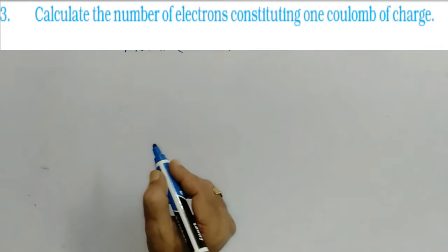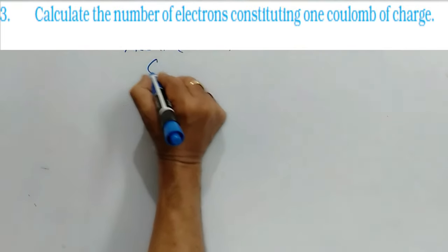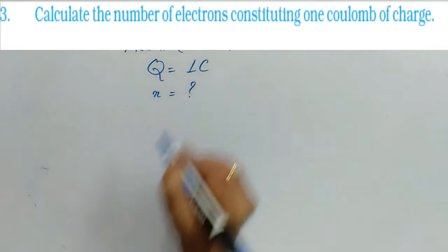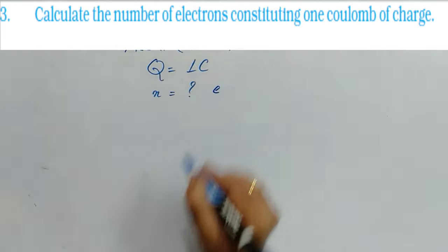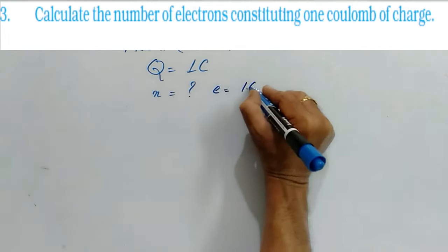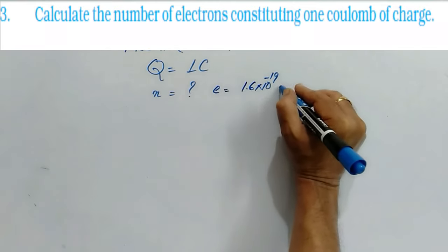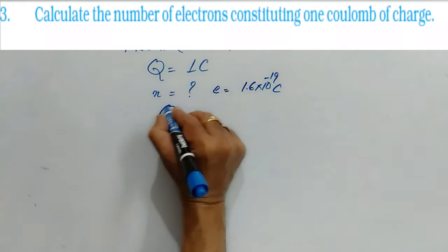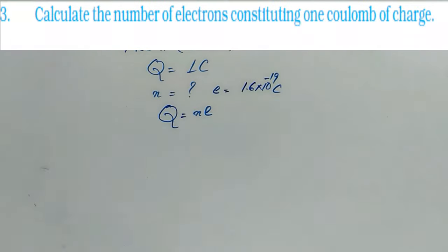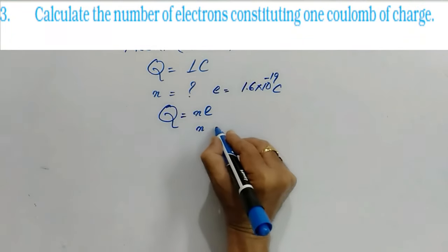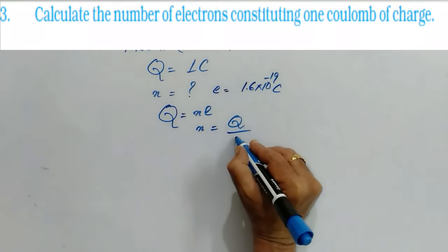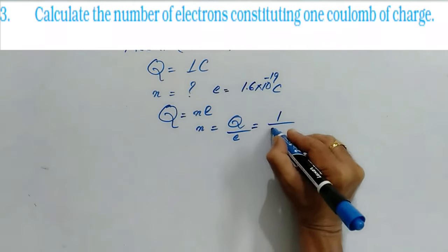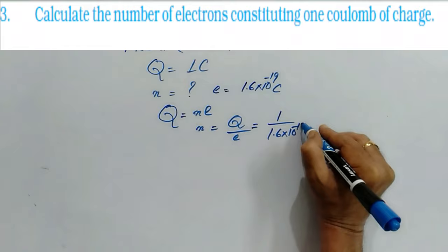The question is, how many electrons will constitute 1 coulomb charge? Here charge is given as 1 coulomb and the number of electrons is asked. The individual charge of an electron is 1.6 into 10 to the power of minus 19 coulombs. Of course it is negative because the electron is carrying negative charge. Now Q is equal to Ne. Here N is asked, therefore we have to divide the charge by the charge of an electron, which is 1 divided by 1.6 into 10 to the power of minus 19.